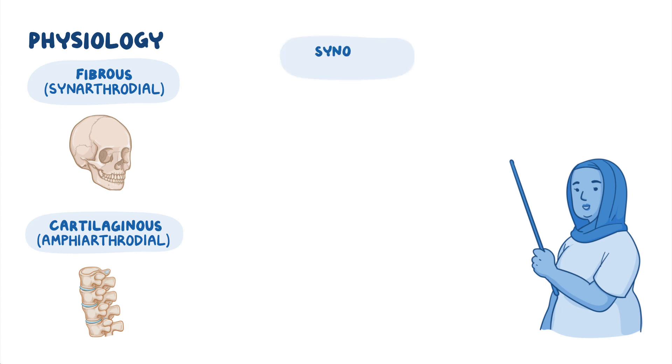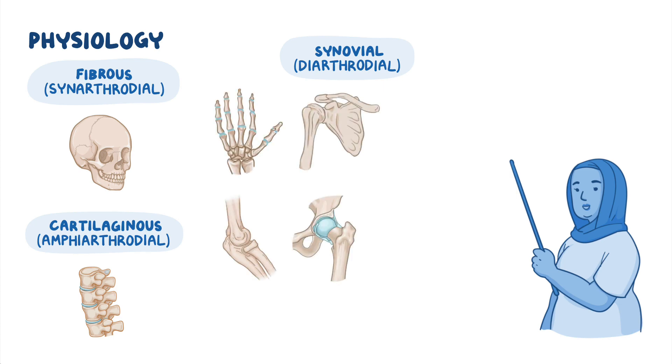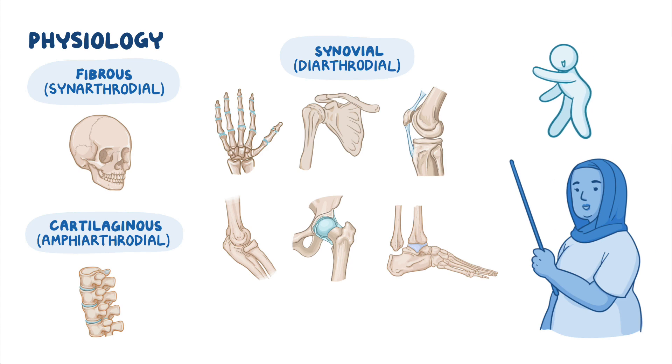Finally, synovial or diarthrodial joints, like those of the wrist, elbow, shoulders, hips, knees, and ankles, are freely movable.